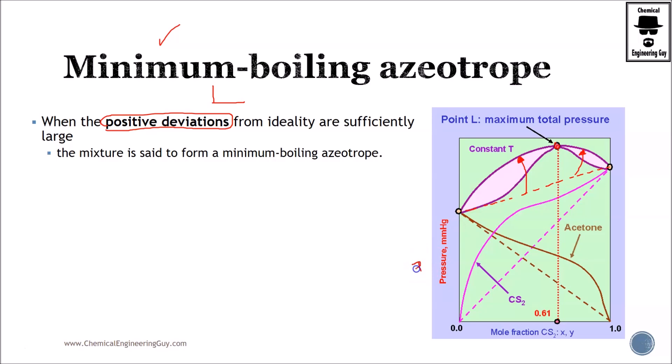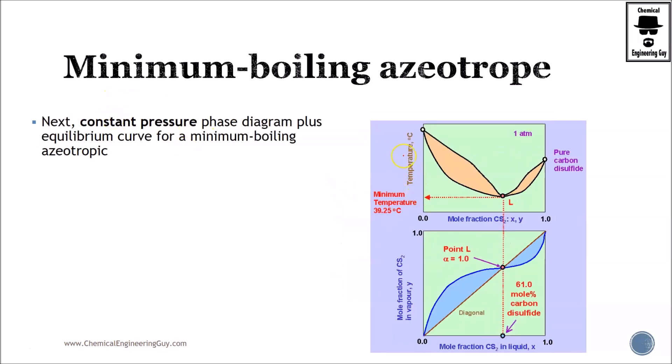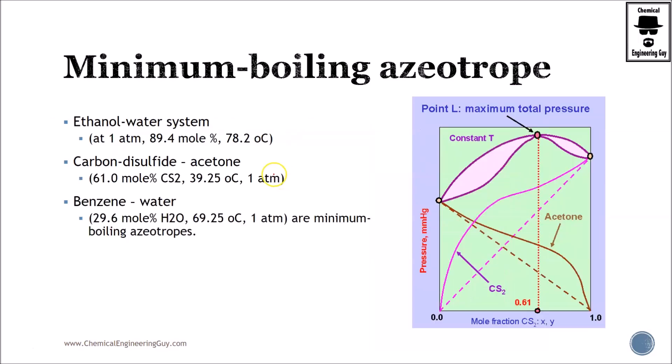Well, this is true for pressure, but actually we want to check out constant temperature, meaning that we are changing pressure. But if you wanted to check out a temperature diagram, which is right here, you will see that the point will be at a minimum. At constant pressure, if we were to graph this minimum boiling azeotrope, we will have this point right here, and this is the lowest point in the diagram. So that's why it's called the minimum boiling azeotrope.